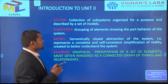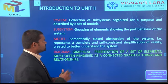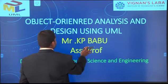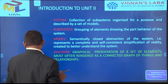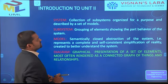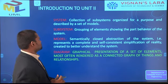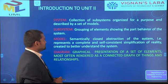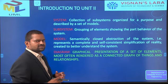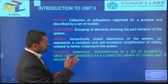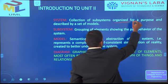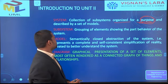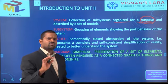What is a system? A system is a collection of subsystems, organized for a purpose and described by a set of models. System contains subsystems, which are used to organize for a purpose, and is described by a set of models.